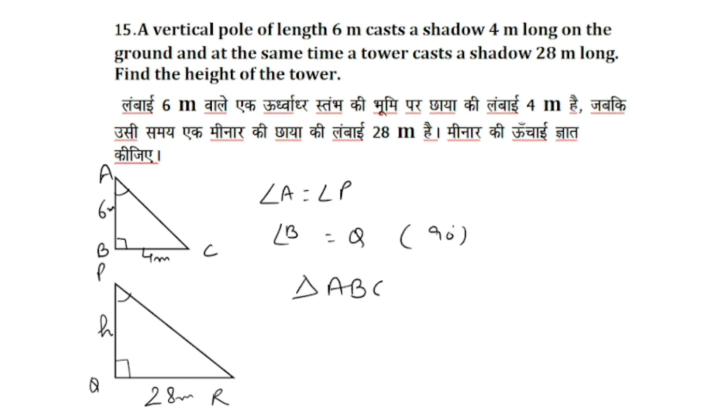So, triangle ABC is similar to triangle PQR. If the triangles are similar, we have angle-angle similarity criteria.